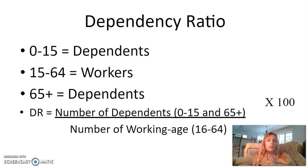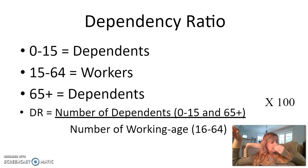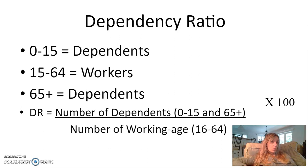Those who are zero to 14 are dependents — too young to work. People who are 65 and older are also dependents — too old to work. People who are 15 to 64 are your working-age population. To calculate your dependency ratio, take your number of dependents (0–15 and 65+), divide by the number of working-age people (16–64), and multiply by 100. A high dependency ratio means a high number of dependents compared to workers, making it hard for a country to provide enough services.